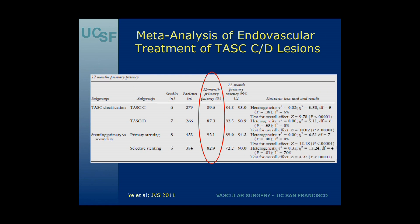When broken down by TASC subtype and stenting policy, technical success was slightly better in TASC C compared to TASC D lesions, and slightly better with primary stenting versus selective stenting, but these results were not statistically significantly different. Similarly, 12-month primary patency was slightly better for TASC C lesions and for the primary stenting group, but again not significantly different.